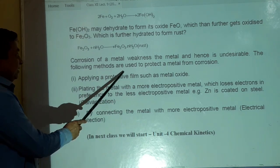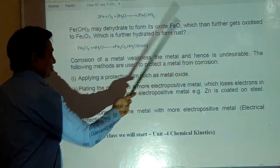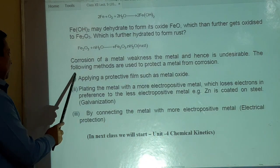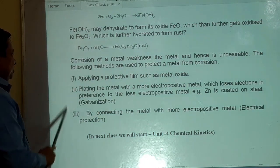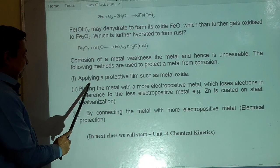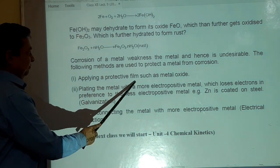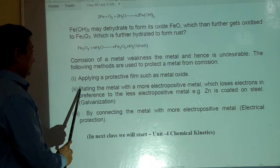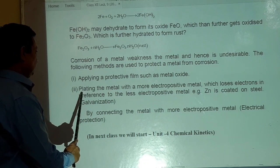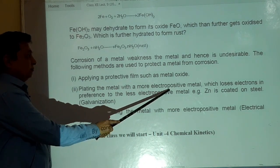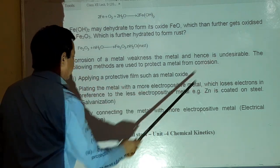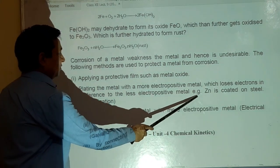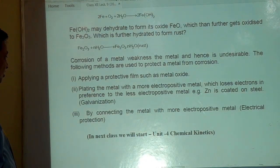The following methods are used to protect a metal from corrosion. यह methods हैं जिससे corrosion को रोकने के लिए prevention काम में ले सकते हैं. First, applying a protective film such as metal oxide. A protective film. Plating the metal with a more electropositive metal which loses electron in preference to the less electropositive metal. For example, zinc is coated on steel galvanization.